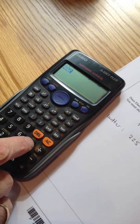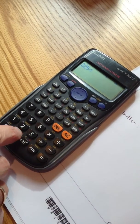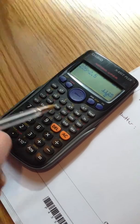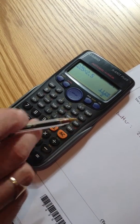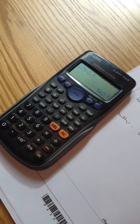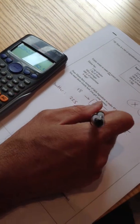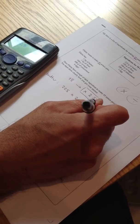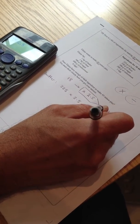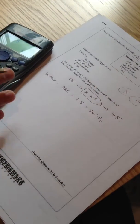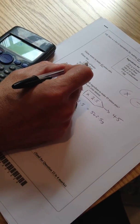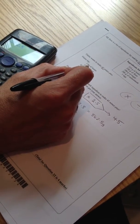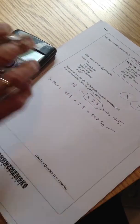225 multiplied by 2.5 equals. And I need that button again. That S-D button to give me a decimal answer, which is 562.5 grams of butter. Right. She's got a kilogram of butter. She's got more than enough butter. So I'm going to tick that. That's fine.